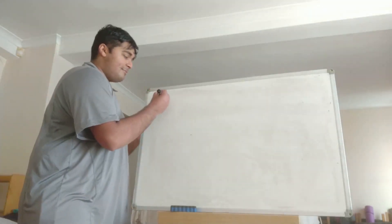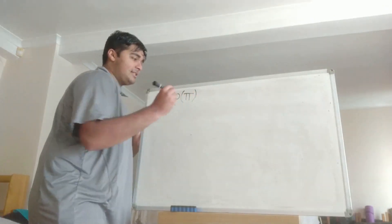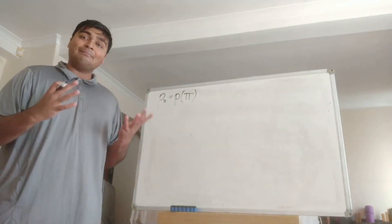Firstly, let's call whatever P(pi) is P_0 for now. So P_0 is just going to be whatever P(pi) is, whatever Alice gets when she plugs in pi into her polynomial.